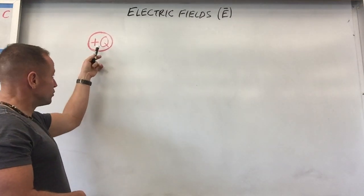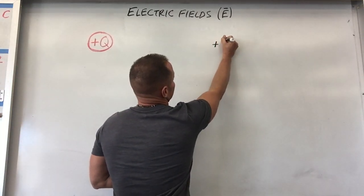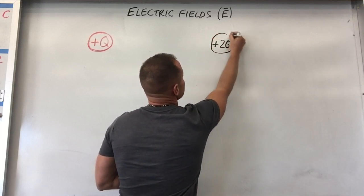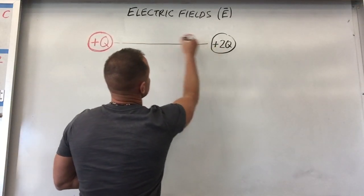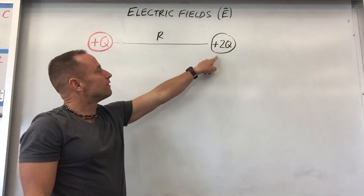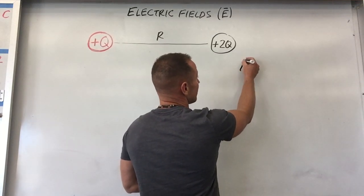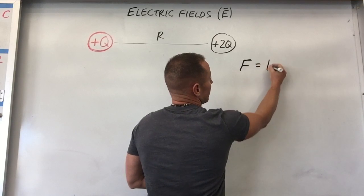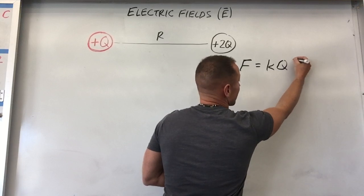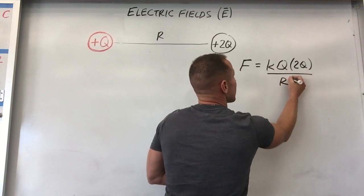Building from that, suppose you have a positive charge and another positive charge that has twice the charge — call it plus 2q — placed at some distance r away. To find the force on that charge, we use Coulomb's law: the force equals Coulomb's constant k times the first charge times the second charge 2q, divided by the distance squared.